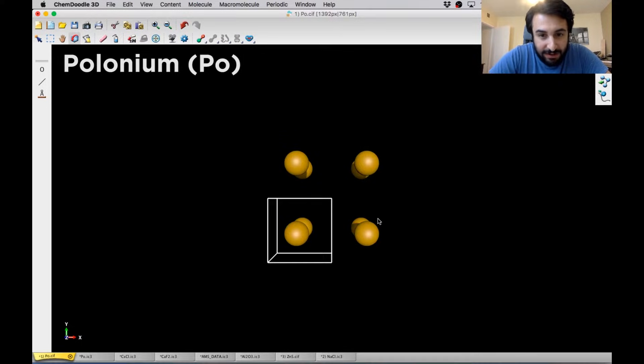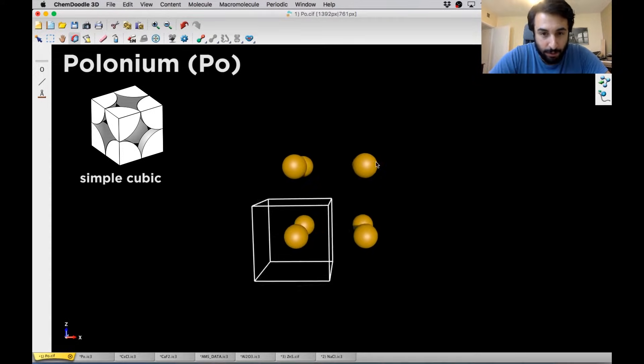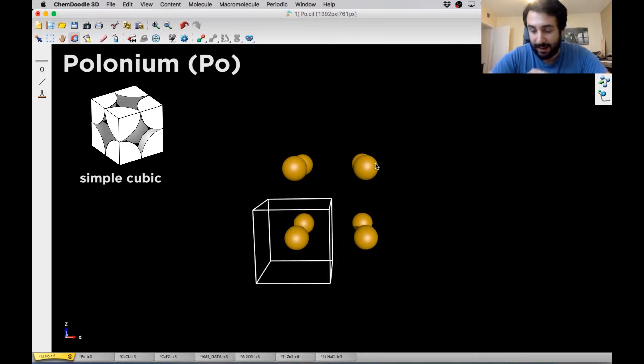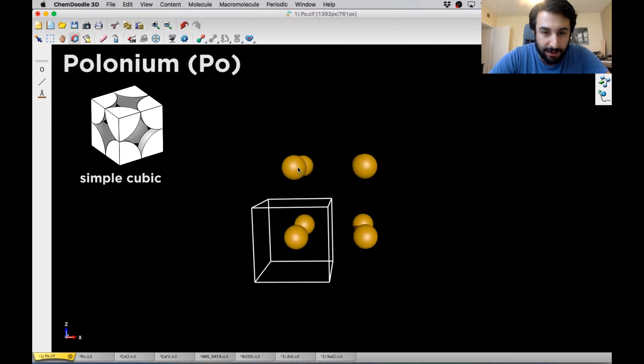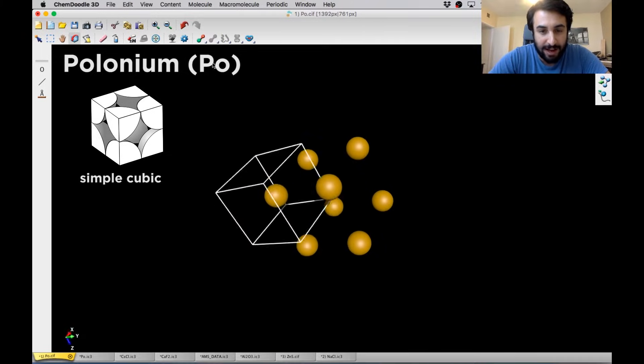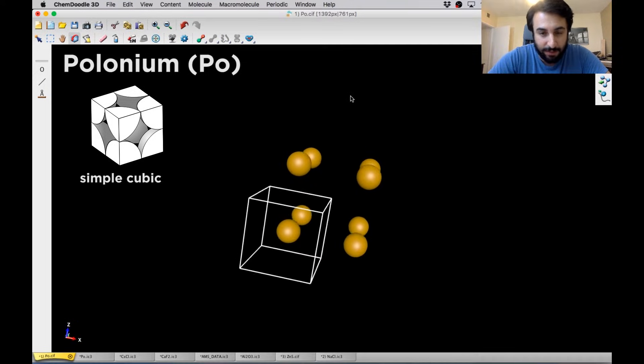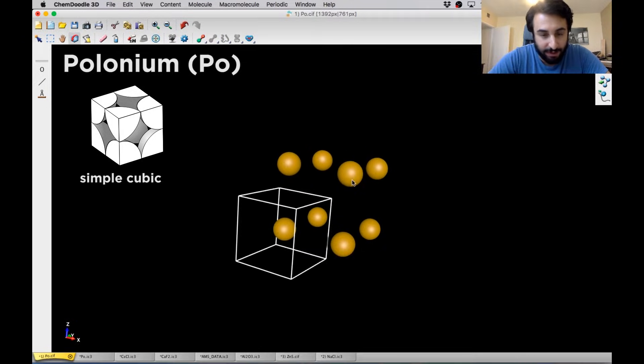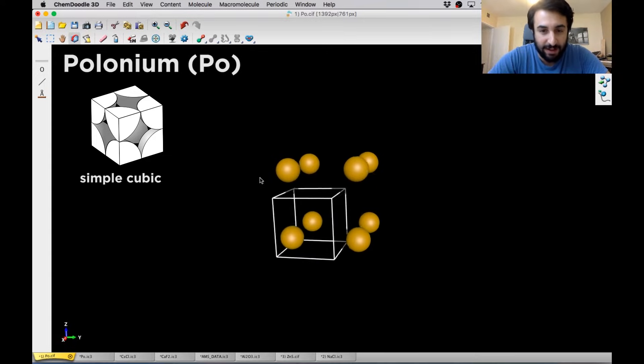And so we can start to see how this is going to get built out. This is actually the true unit cell for polonium. This is a simple cubic structure, and what the unit cell would be is just having these eight atoms at the corners of the cell. So this is really the simplest structure that can be adopted by any metal. And in fact, polonium is the only metal that adopts this structure.